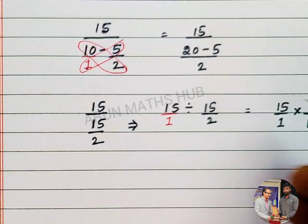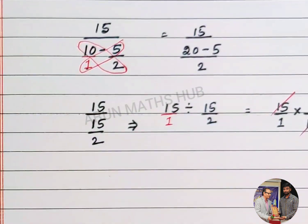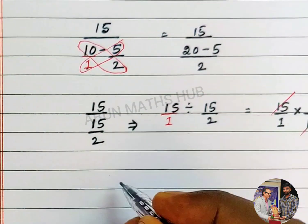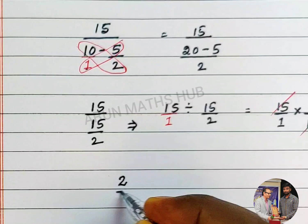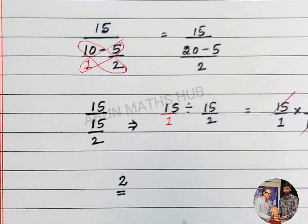Now, 15, 15 will cancel out. You will get 2 divided by 1. 2 divided by 1 is 2. Therefore, the final answer is 2.